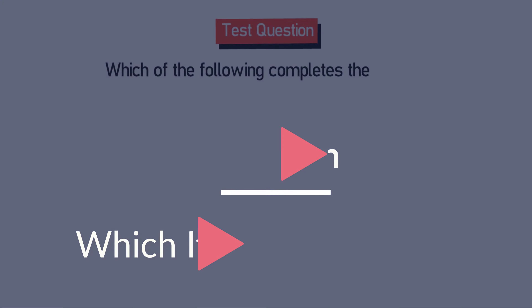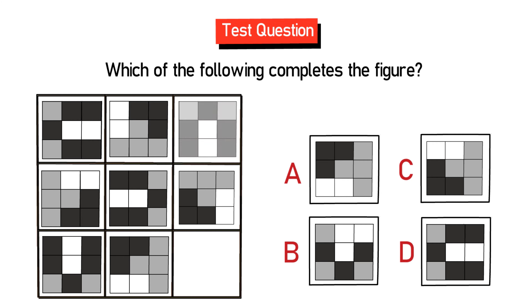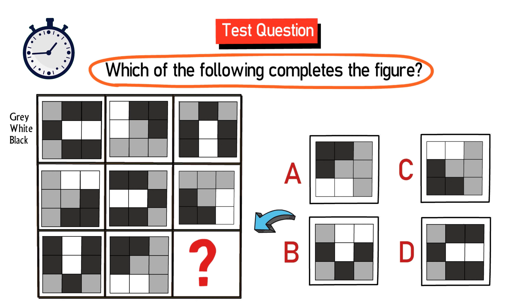I wanted to share with you a cool question which started showing up on tests very recently. You're presented with a 3x3 matrix. Each square of the matrix contains another matrix inside, with 3x3 small squares. There are different colors inside the small squares — gray, white, and black. One 3x3 square is missing, and you need to select from four possible choices — A, B, C, and D — to determine which shape completes the figure.